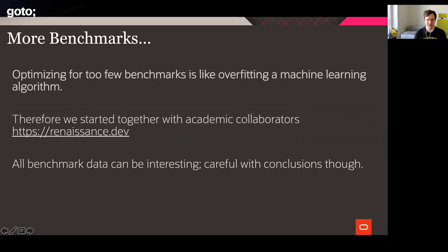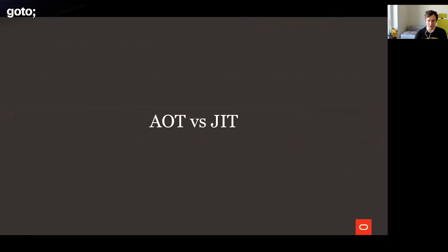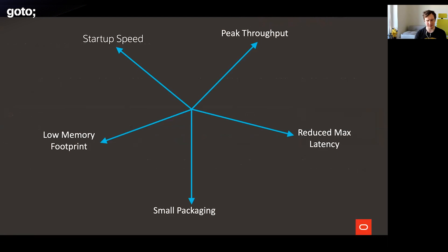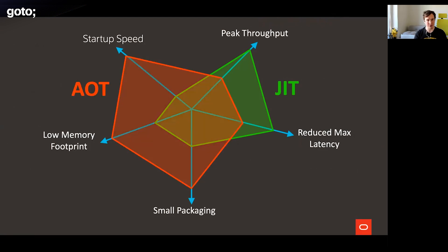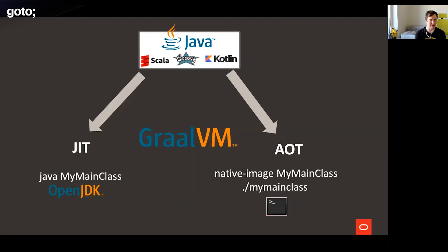Let's talk about ahead-of-time compilation versus running with a JIT. Ahead-of-time compilation is an interesting concept — it can give you some performance benefits, but you need to understand what we're talking about. The JIT setup is optimized for peak throughput: when the code is warmed up and everything is compiled, it will run really, really well. AOT optimizes in a different dimension: when you compile your code ahead of time, you cannot apply all the speculative optimizations that JIT has access to, so you might not see peak throughput as great. But you will get better startup speed, a much better memory footprint, and smaller packaging size. Luckily, with GraalVM you don't have to choose — it offers both options.